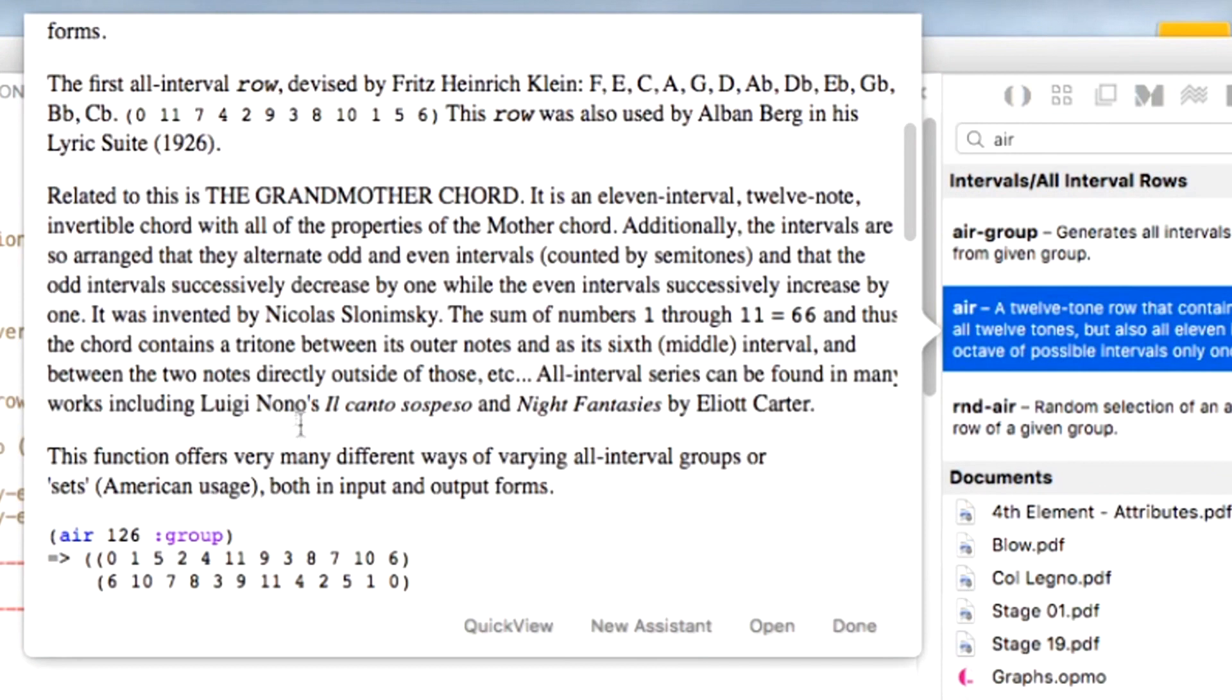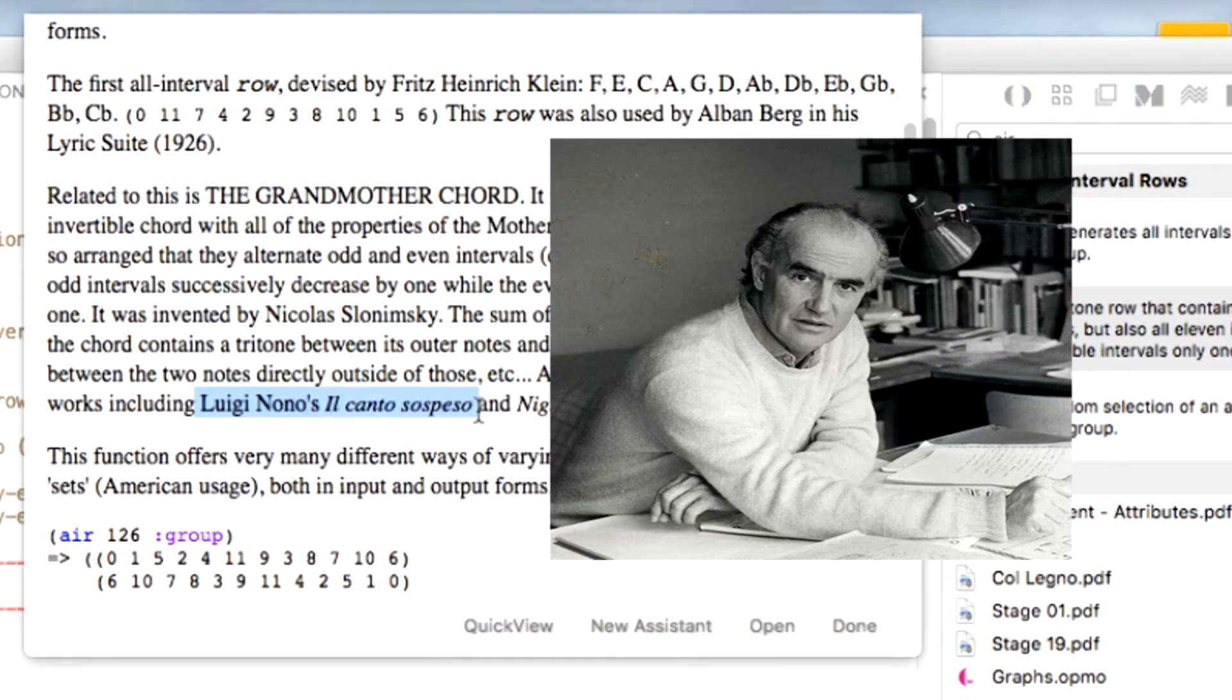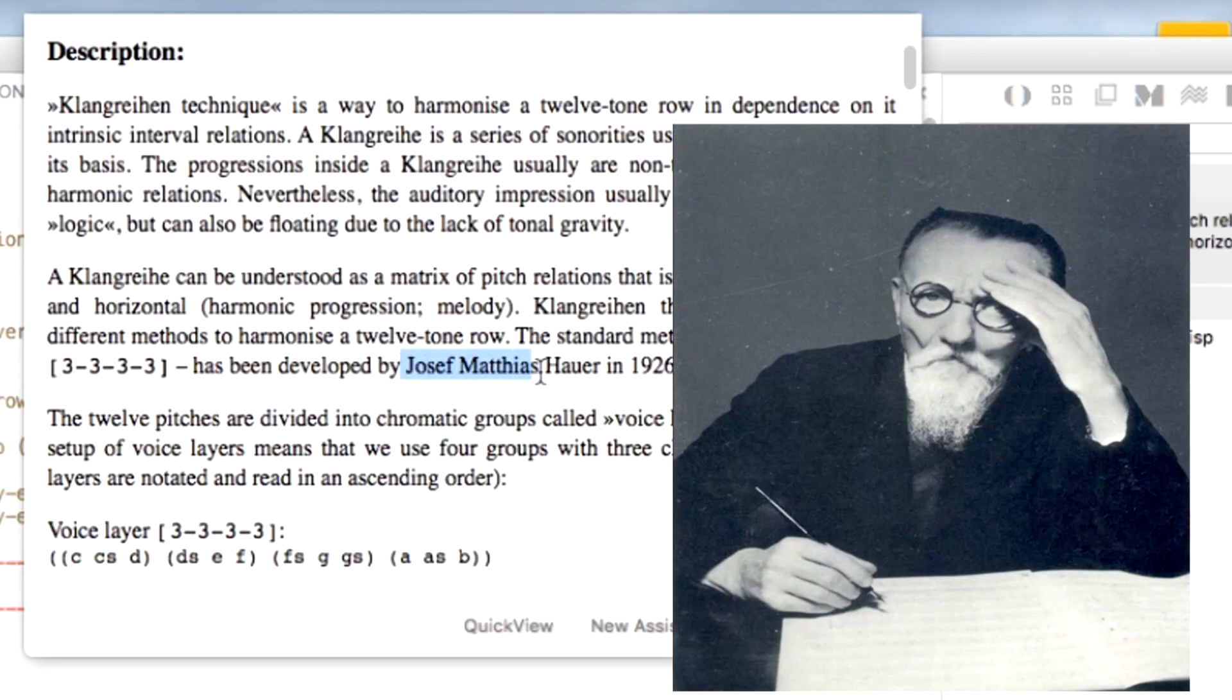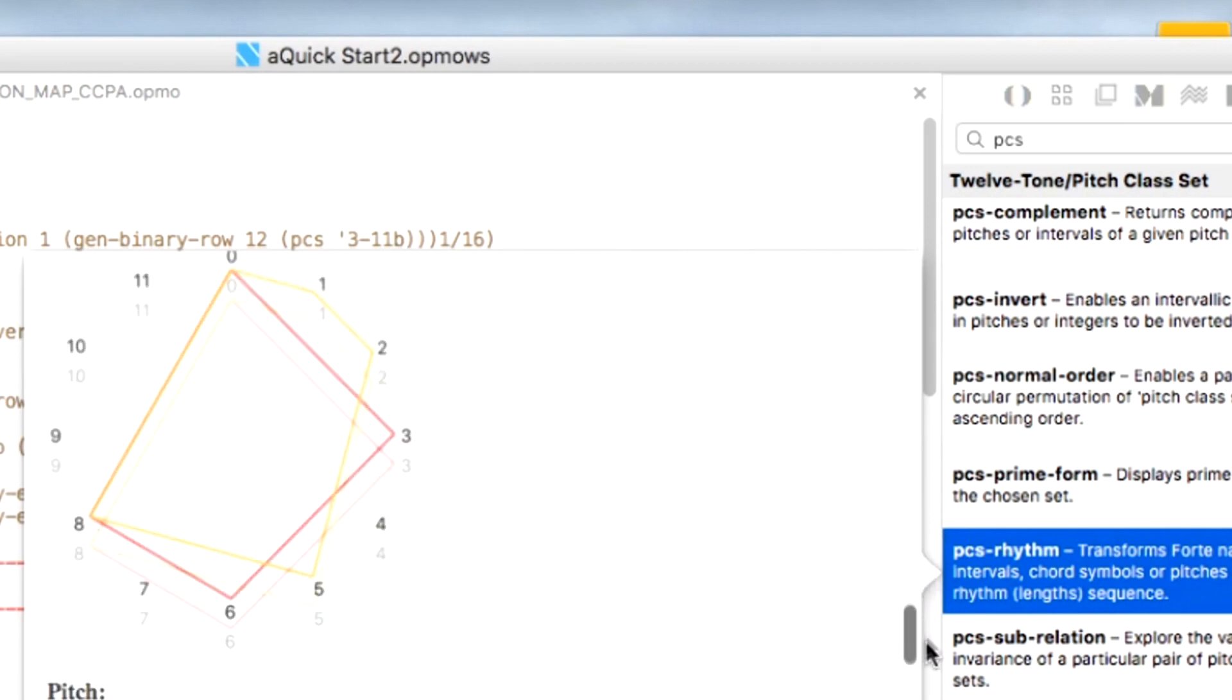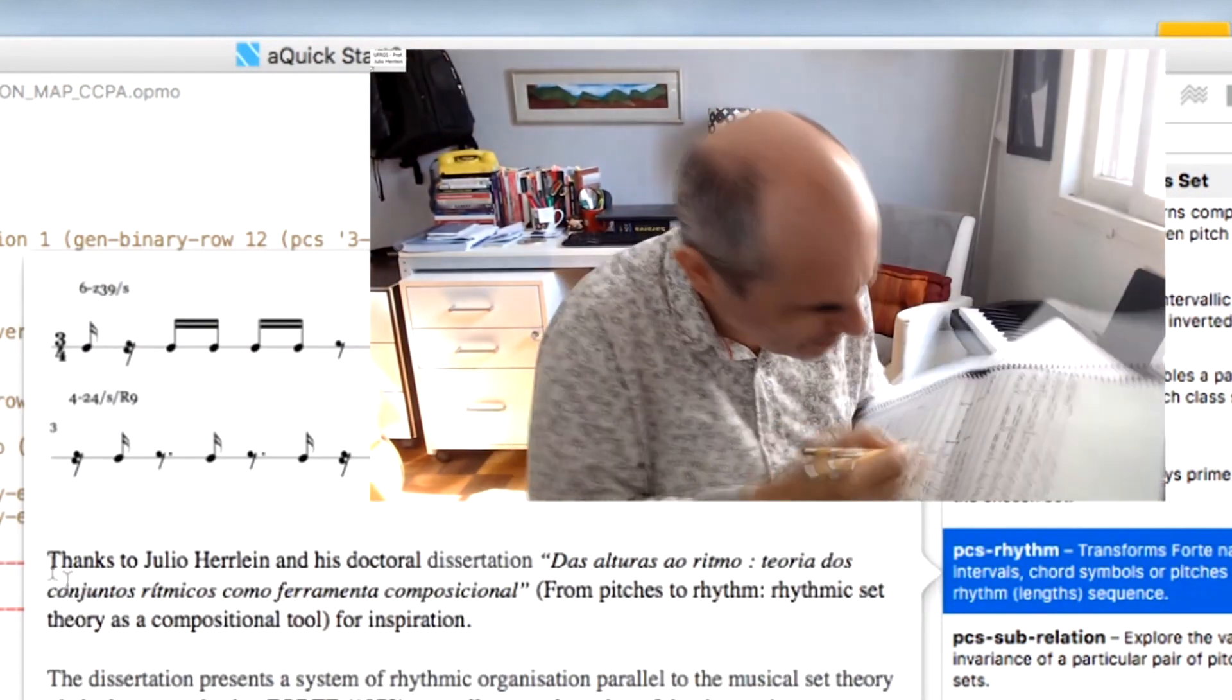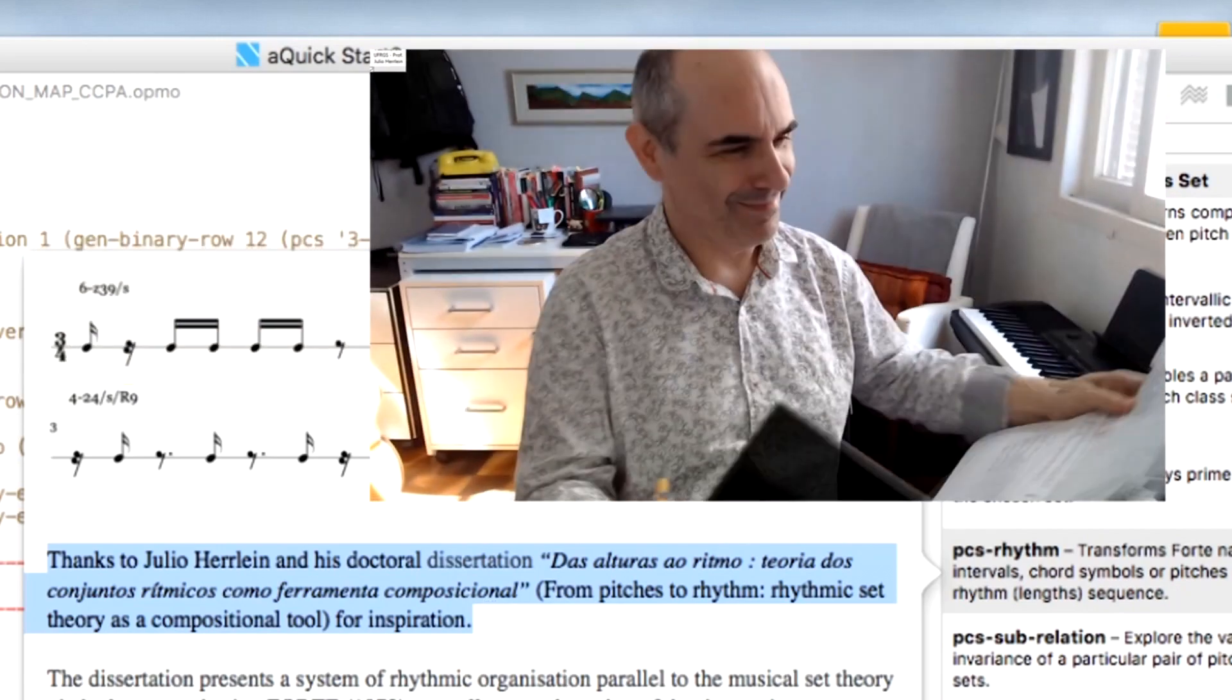One important thing to say is that Opus Modus is historically referenced, so you are going to find a lot of information inside the functions of the software. This information is related to techniques and intellectual achievements made by composers and theorists throughout the history of music.